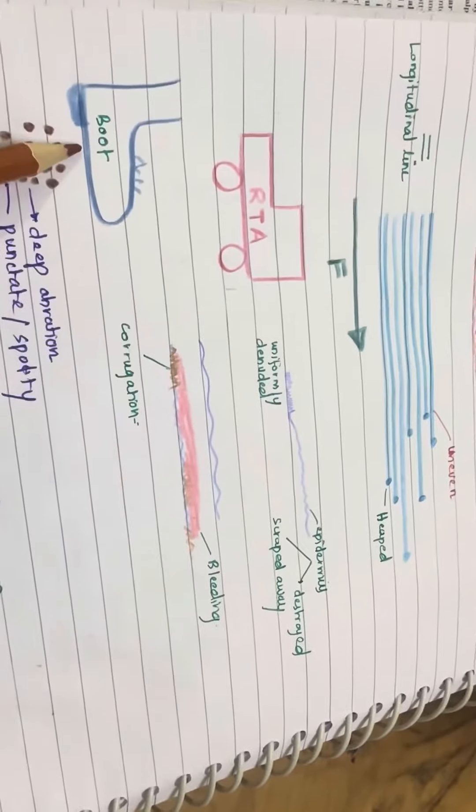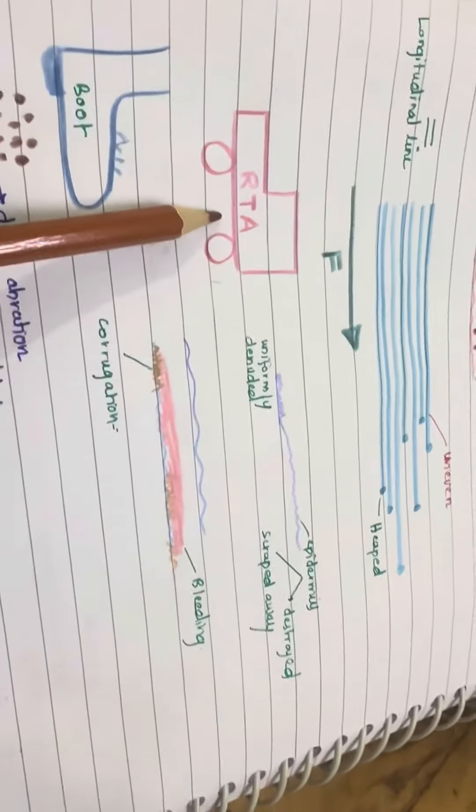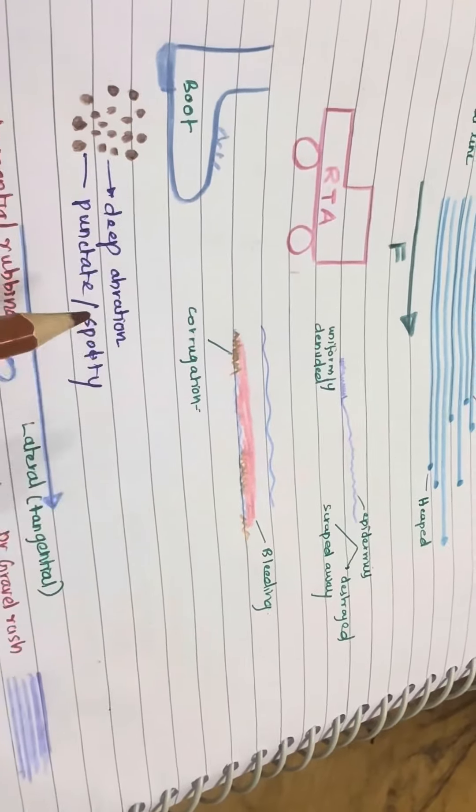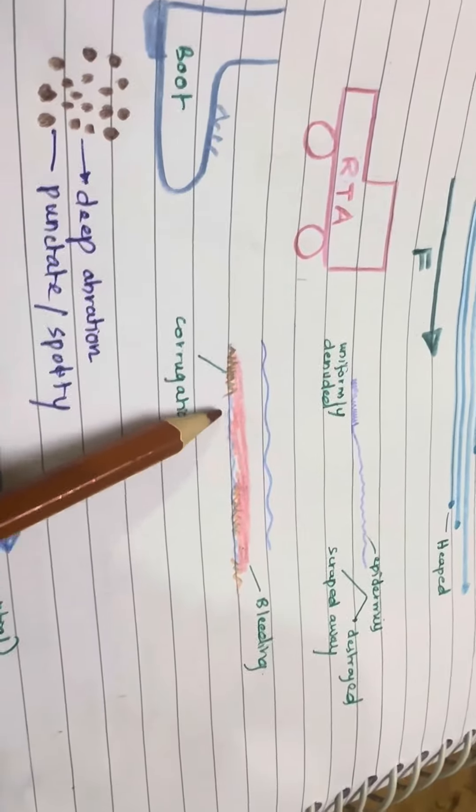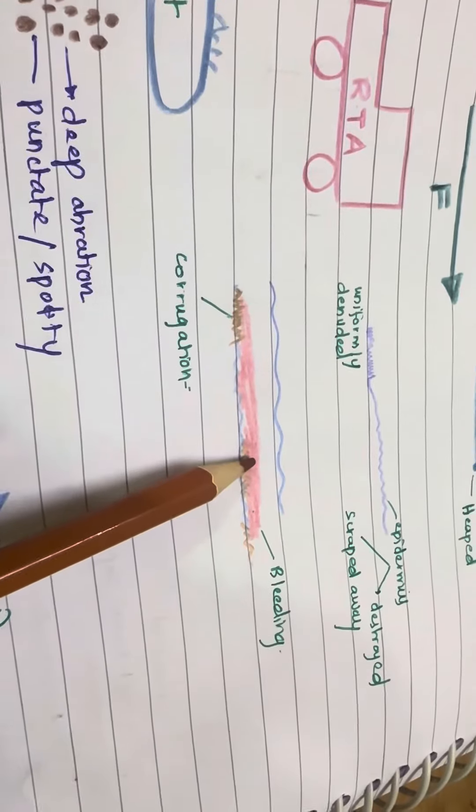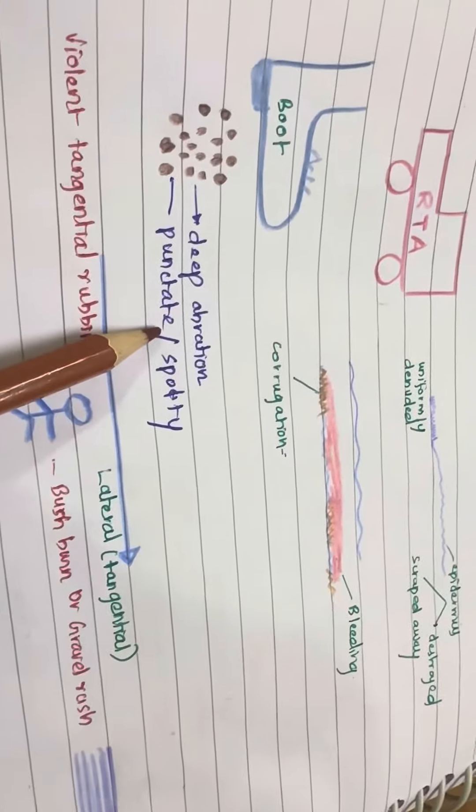A glancing kick with a boot produces a graze. This abrasion is commonly seen in a road traffic accident. Many abrasions extend into the dermis because of the corrugation of the dermal papillae and bleeding occurs. Deep abrasions have punctuated or spotty appearances.